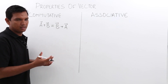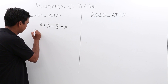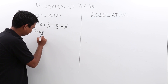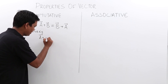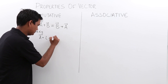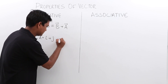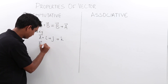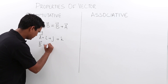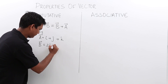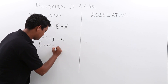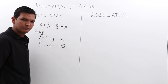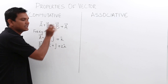Let us understand this with an example. If I have an A vector given by i cap plus j cap plus k cap, and another B vector given by 2i cap plus j cap plus 2k cap. Now, if I calculate the LHS and RHS, let us see what happens.